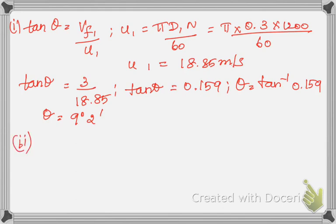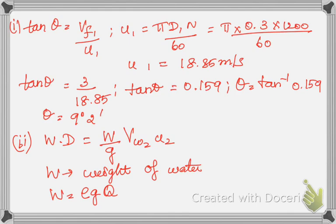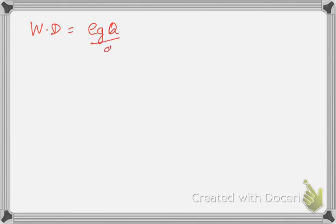For work done, the formula is: Work Done = (ρ g Q / g) × vw2 × u2, where ρ g Q represents the weight flow rate of water, and Q is the volume flow rate. We know ρ and g, but we still need to find Q, vw2, and u2.